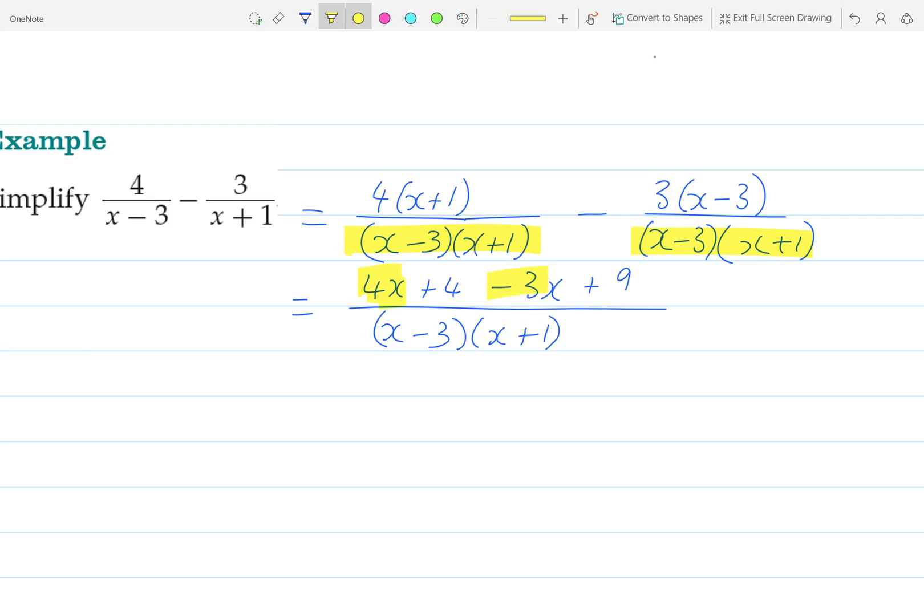Collecting like terms, I have 4x and negative 3x, and 4 and 9. So that gives me (x+13) over (x-3)(x+1).